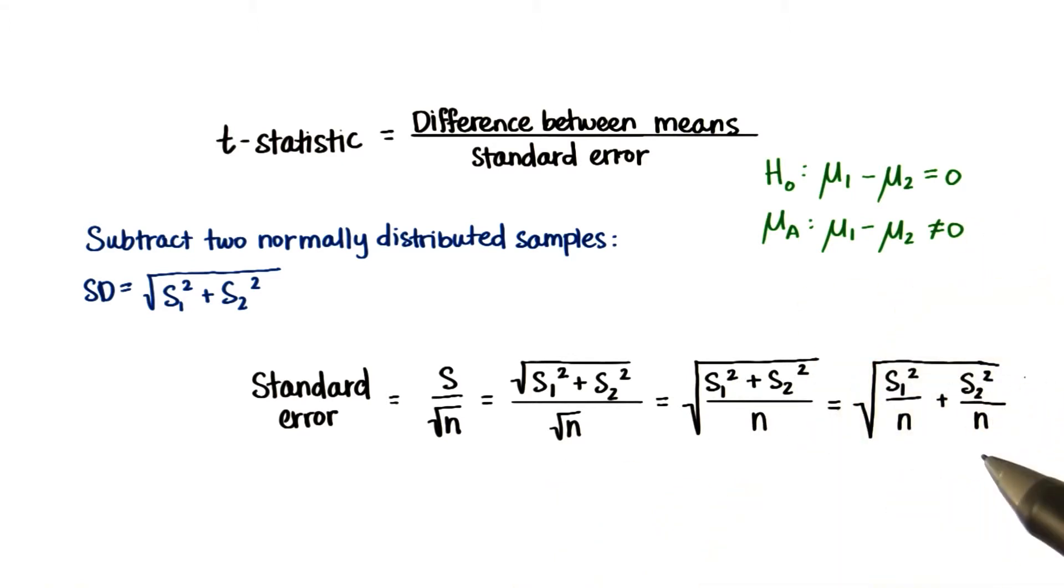Now what happens if our two sample sizes are different? Then we simply have sample size one for the first sample, and the sample size two for the second sample. This is our new standard error for independent samples.